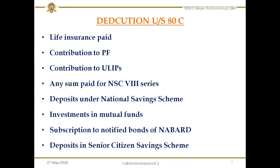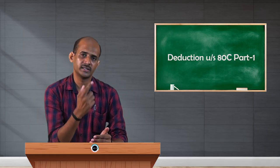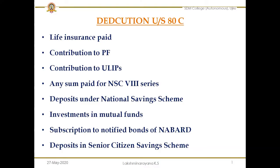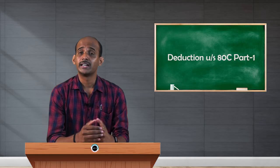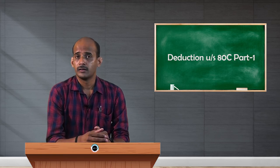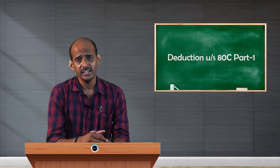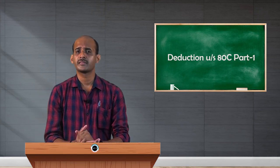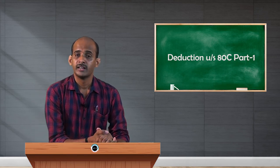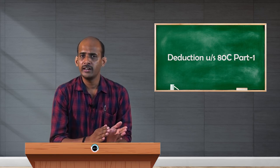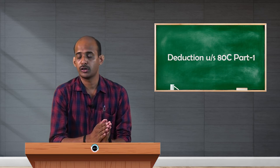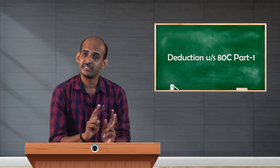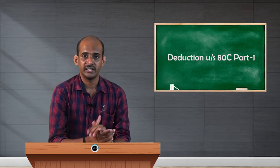What are the options to invest money or spend income? One such option is life insurance policies. When you take life insurance policies for yourself or your family members, you pay the premium — whether monthly, quarterly, half-yearly, or annually. Such premiums paid are eligible for deduction. From the total income earned, you can deduct the premiums paid for LIC, subject to a condition: the actual amount of premium paid or 10% of the sum assured, whichever is less.